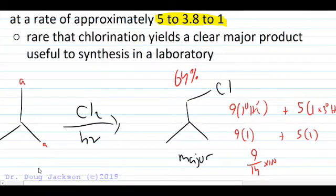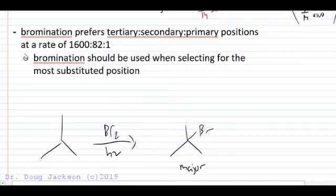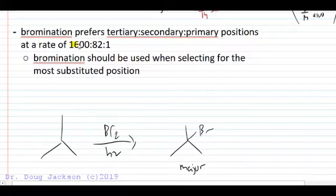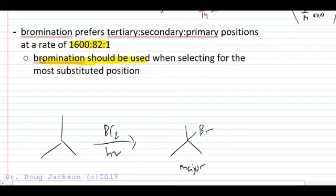If we want to be more selective to the tertiary position, bromination on the other hand is going to prefer tertiary to secondary to primary at a rate of 1600 to about 82 to 1 odds of the more substituted position. So 1600 tertiary to 1 primary, 82 to 1 secondary. Bromination should always be used when selecting for the more substituted position in our final product — it's going to be the most useful in synthesis in most scenarios.